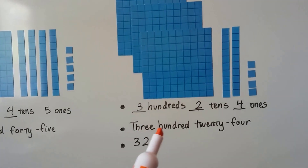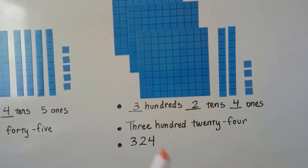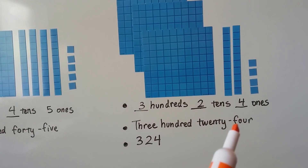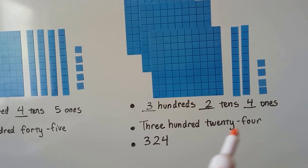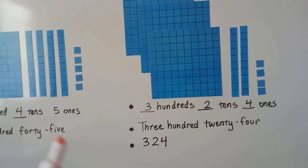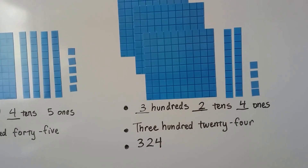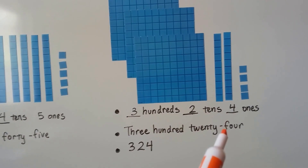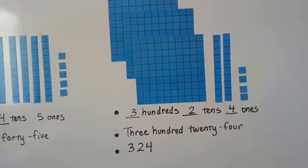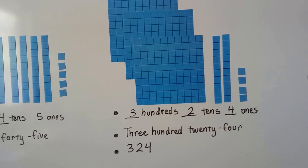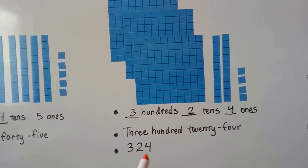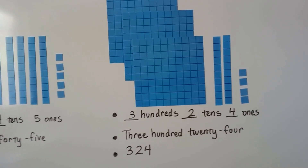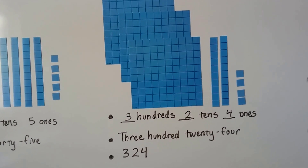We don't use a hyphen with the hundreds — there's no hyphen for 100 or 300. It's only for the two-digit part, like 24, 45, or 53. You put a hyphen between the tens and the ones. This would be three in the hundreds place, two in the tens place, and four in the ones place: three hundred twenty-four.